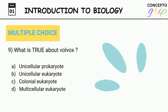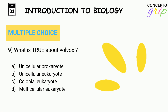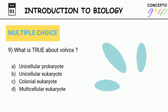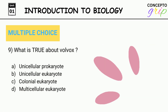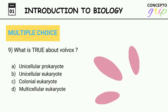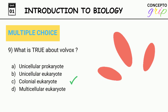Question 9. What is true about Volvox? A. Unicellular prokaryote, B. Unicellular eukaryote, C. Colonial eukaryote, D. Multicellular eukaryote. Correct option is C. Colonial eukaryote.